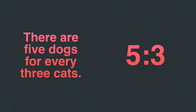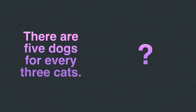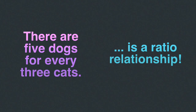We now know that it's five what — five dogs to what? Every three cats. Notice that the ratio is five to three, not 'there are five dogs for every three cats.' Ratios in themselves don't tell us what they are comparing. But when we use words, we can explain the relationship that's being compared. And so because this isn't a ratio but it describes the relationship of a ratio, we call it a ratio relationship.